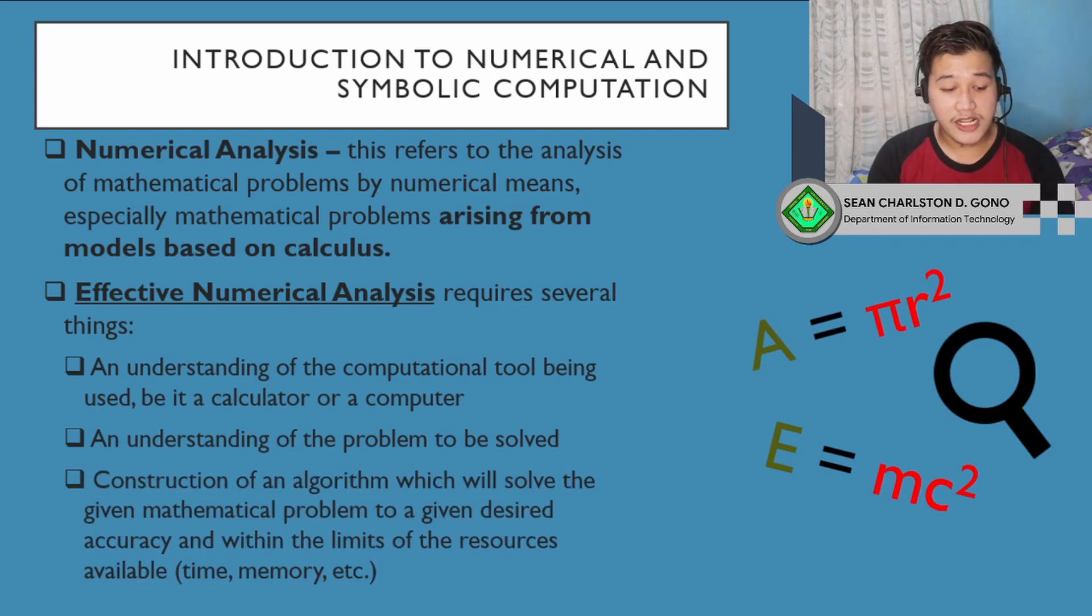Finally, the construction of an algorithm which will solve the given mathematical problem to a desired accuracy and within the limits of available resources. This could be time, memory, or anything else. After we create the model and understand the limitations of the computer or calculator we're going to use, we can now create an algorithm based on our limitations. If our computer can only handle 1 million numbers, we can modify our algorithm based on that. Or if our problem can only have 4 decimal points, the algorithm itself must only contain 4 decimal points. Those are how we can use numerical analysis effectively.